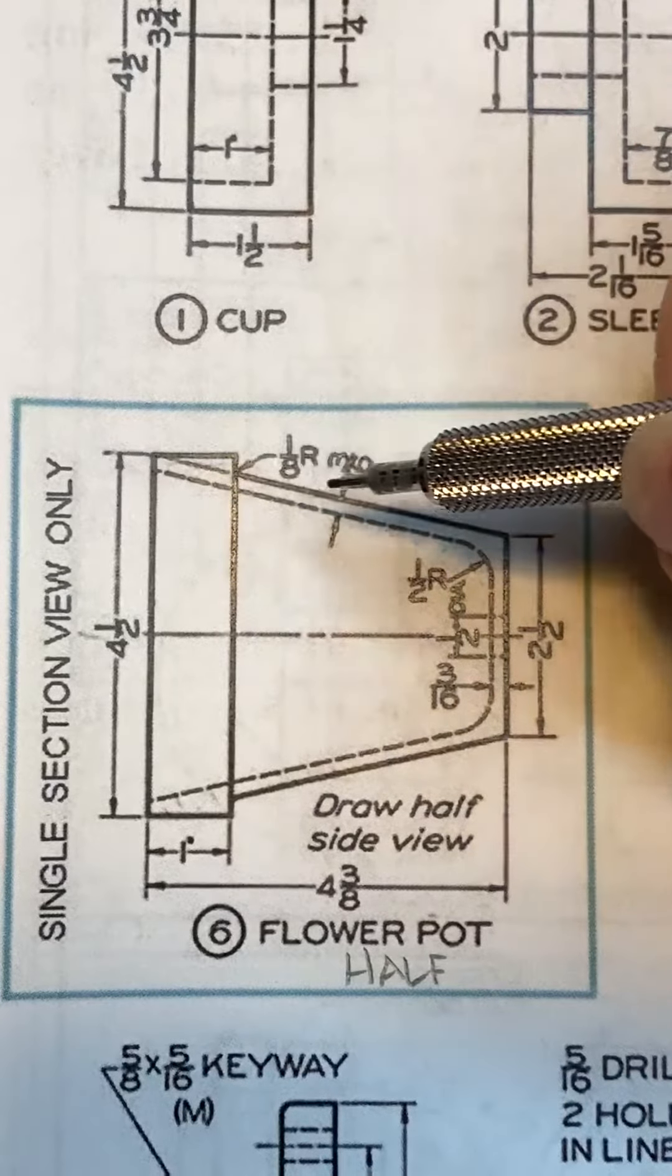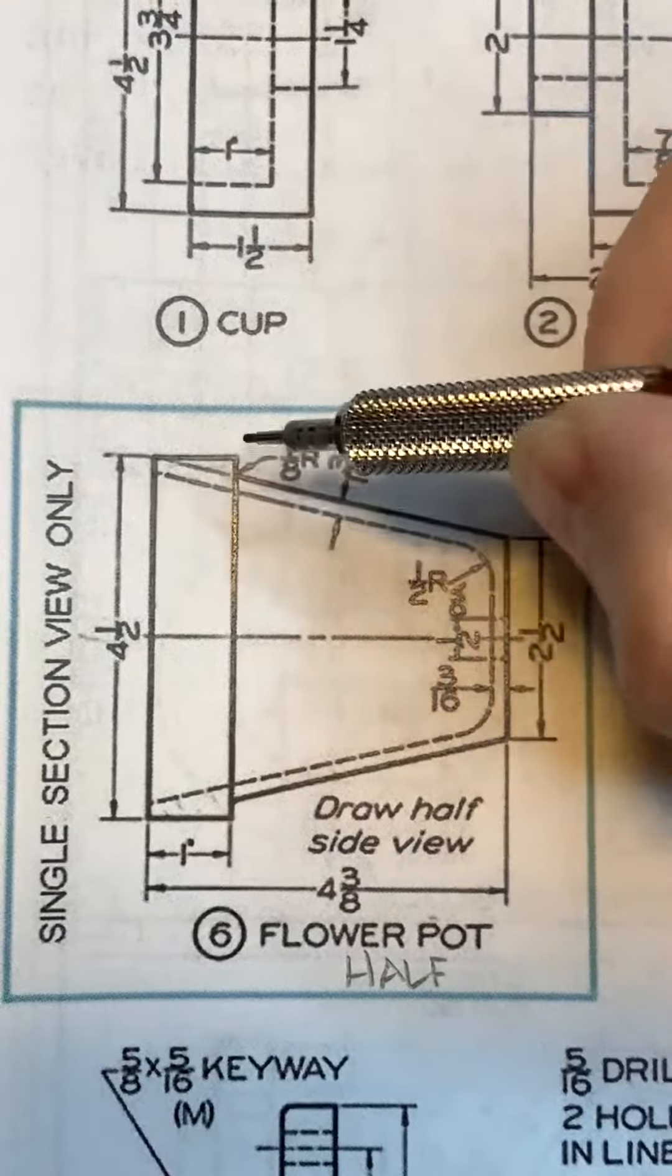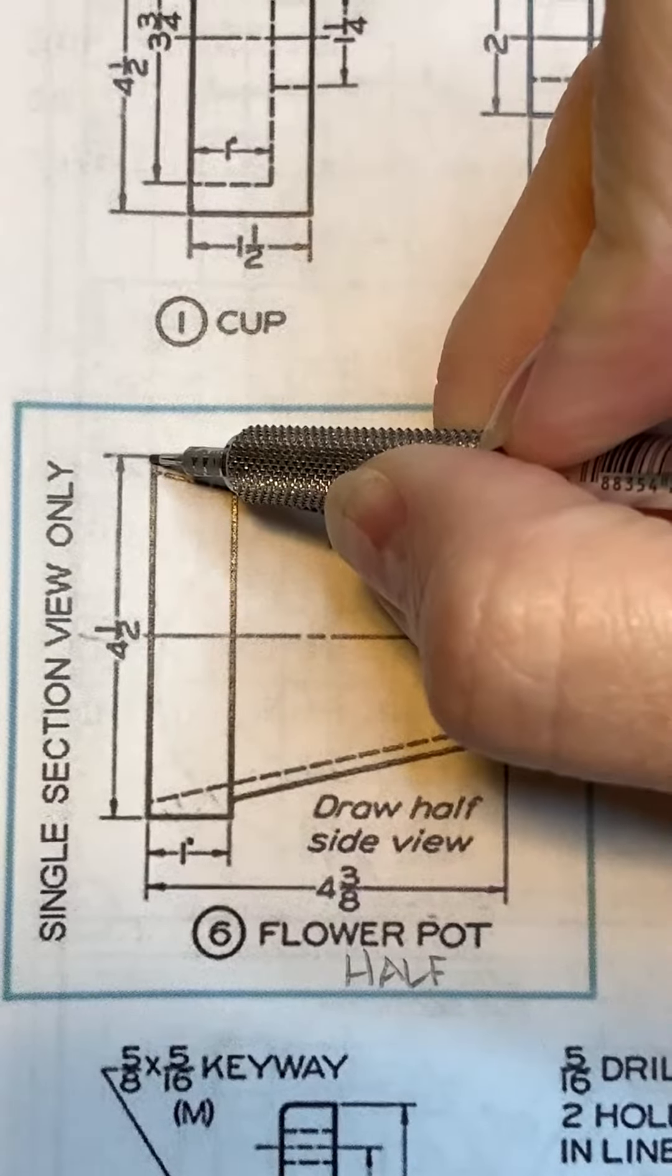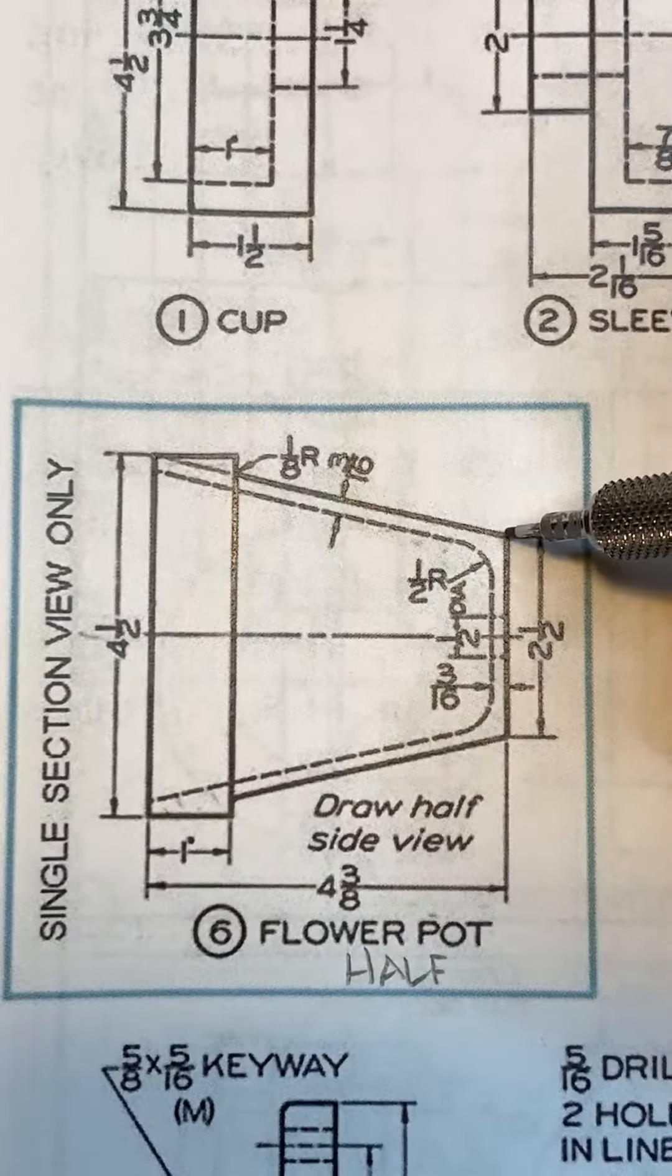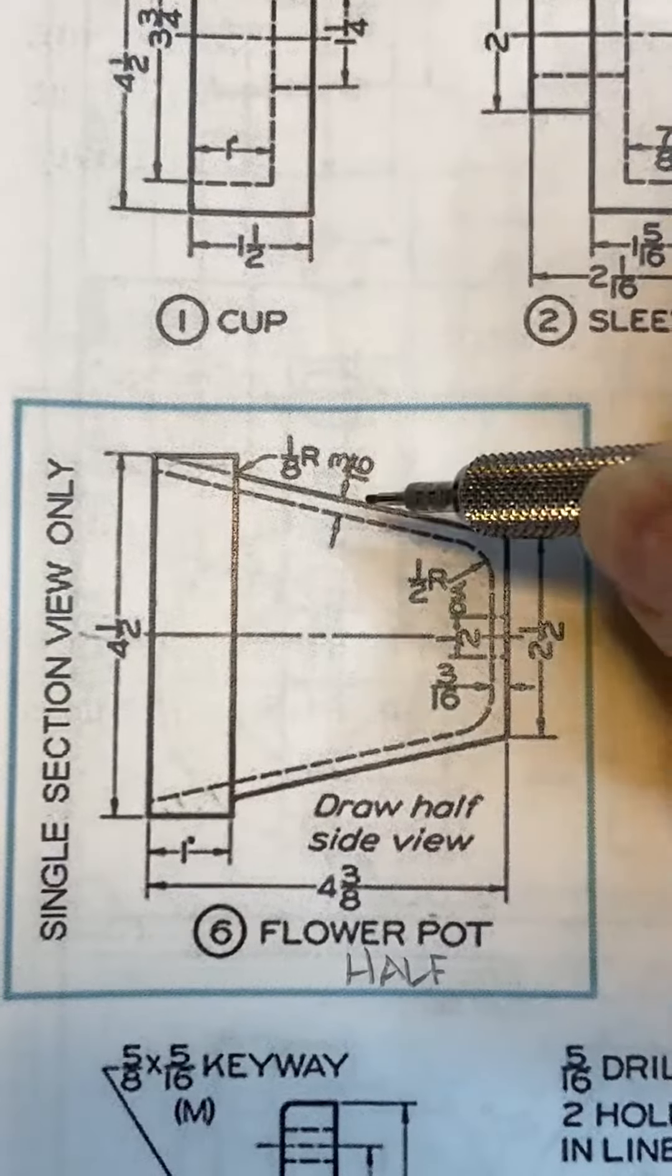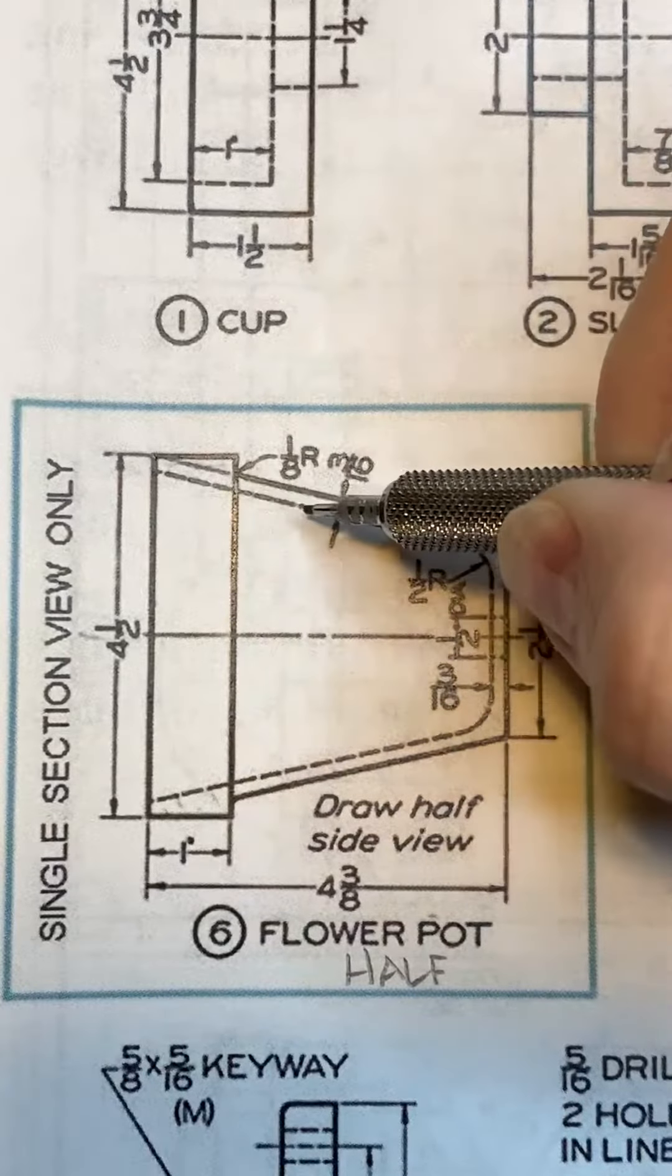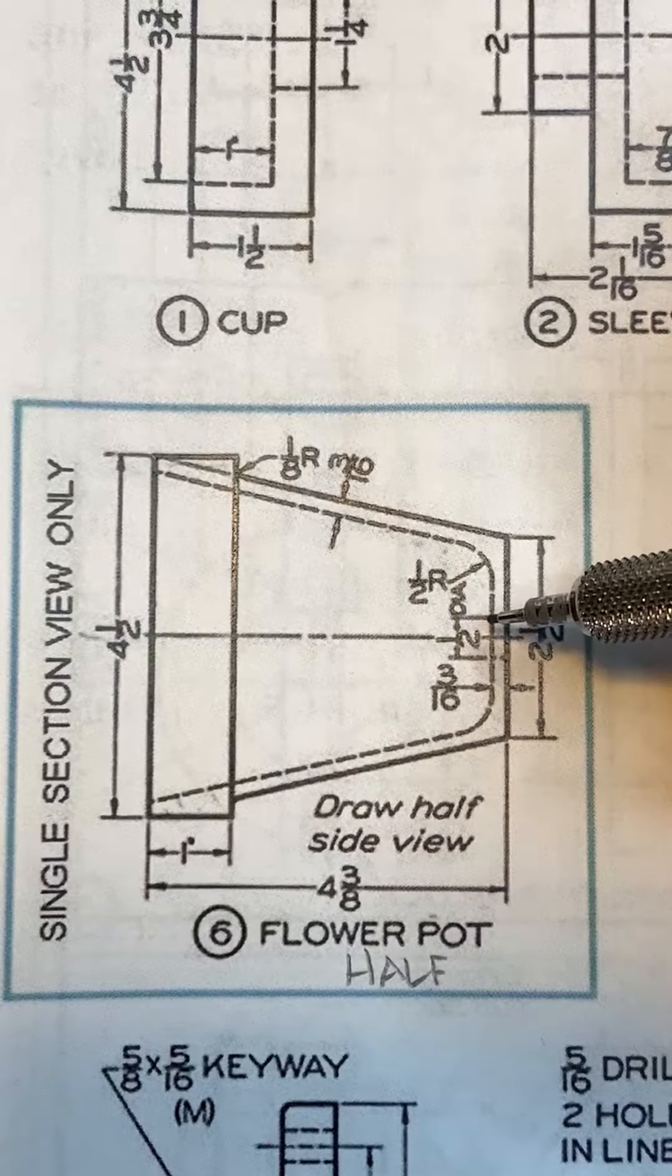To create this angle here, this angle starts at that intersection point and moves down to this corner. Then you can offset your 3/16ths, and that will give you this inside angle.